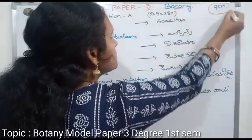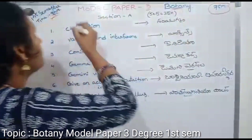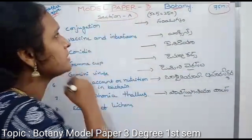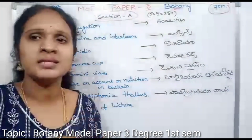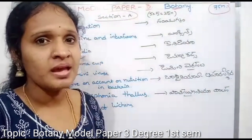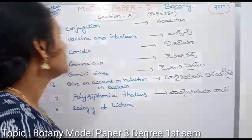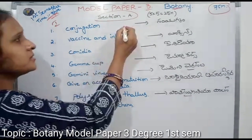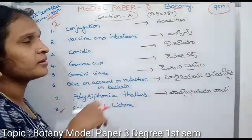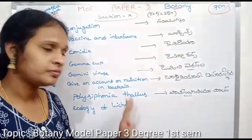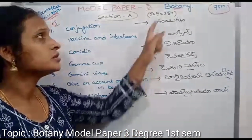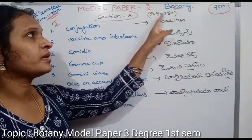Total marks are 75 marks, time is 3 hours. Section A is short questions. Section B is essay questions. Section A is first — total 8 questions. We will answer any 5 questions from the 8 questions. Each question carries 5 marks.